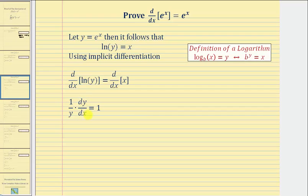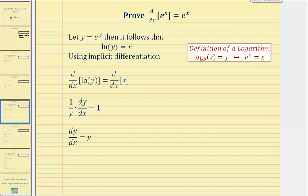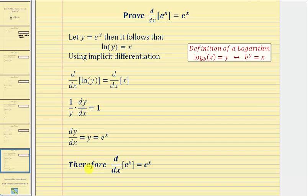And now we want to solve for dy/dx, so we'll multiply both sides by y. So we have dy/dx equals y, but remember y is equal to e to the x, and therefore we have our proof. The derivative of y with respect to x is equal to e to the x, and therefore it follows the derivative of e to the x with respect to x equals e to the x.